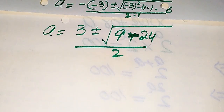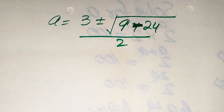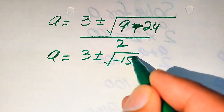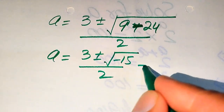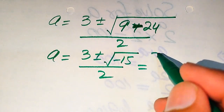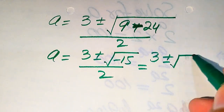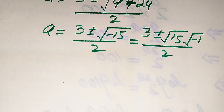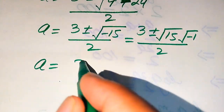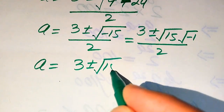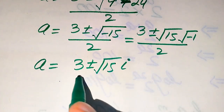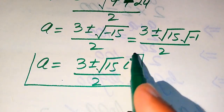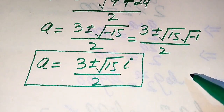Since 9 minus 24 equals negative 15, we get a equals 3 plus or minus square root of negative 15, divided by 2. Separating the square root, this becomes 3 plus or minus square root of 15 times square root of negative 1, divided by 2. Since square root of negative 1 equals i (iota), the two complex roots are a equals (3 plus or minus i times square root of 15) divided by 2.